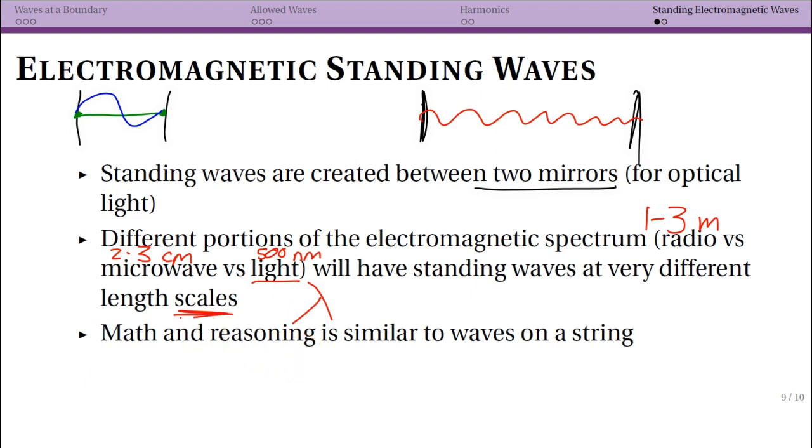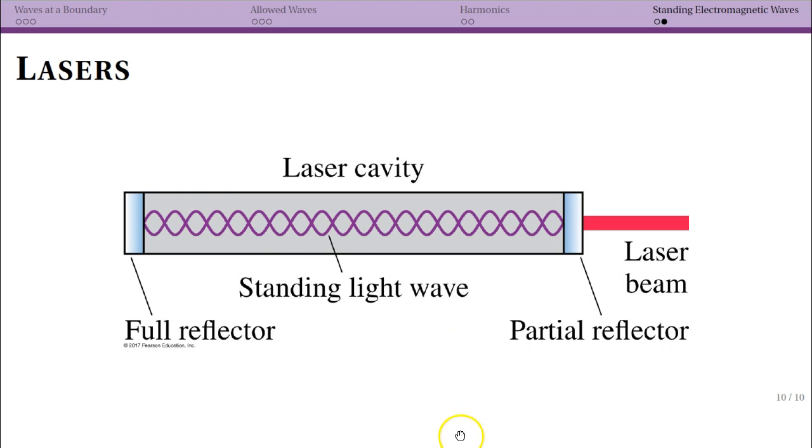But the reasoning that we're using and the math really looks the same as standing waves on a string. So the example that the book gives, which is a really nice example for what we're doing right now, is the idea of a laser.